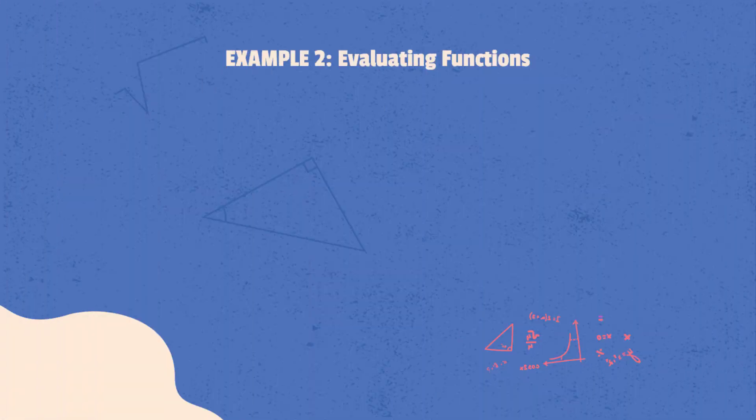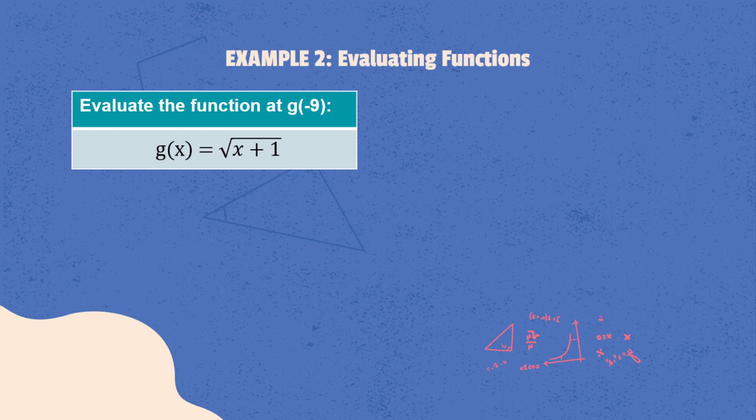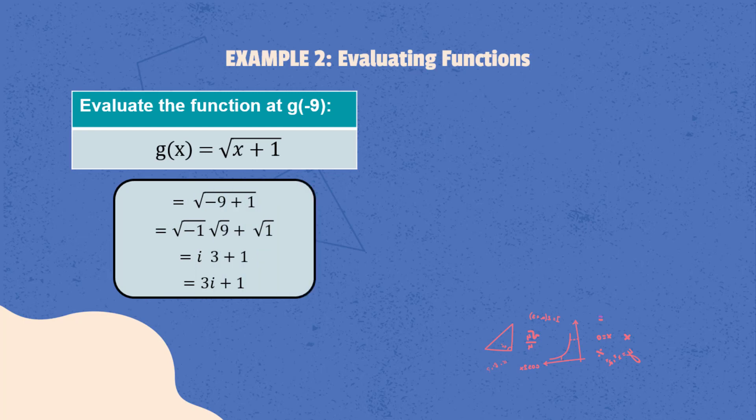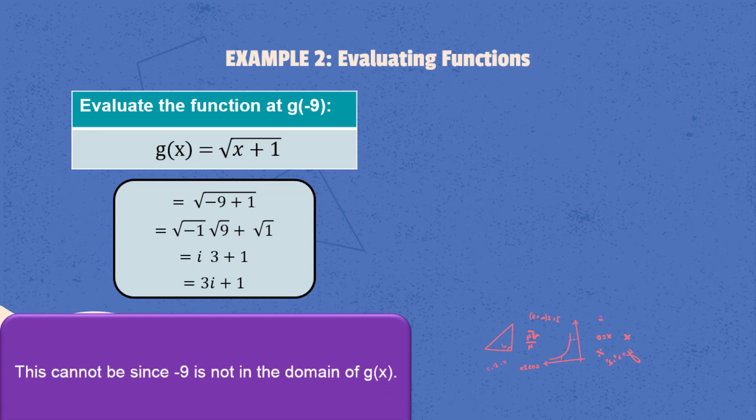Let's take a look at these examples. Evaluate the function g of x is equal to the square root of x plus 1, when x is equal to negative 9. By replacing x with negative 9, we will get the square root of negative 9 plus 1. To solve this, we represent negative 9 as the square root of 9 times the square root of negative 1, and separate each term. The square root of 9 is 3, and the square root of negative 1 results to i, an imaginary number. The final result is 3i plus 1. Although we were able to evaluate the function, negative 9 does not belong to the domain of g of x since it resulted in an imaginary number. You will get to learn about complex numbers in higher mathematics courses.